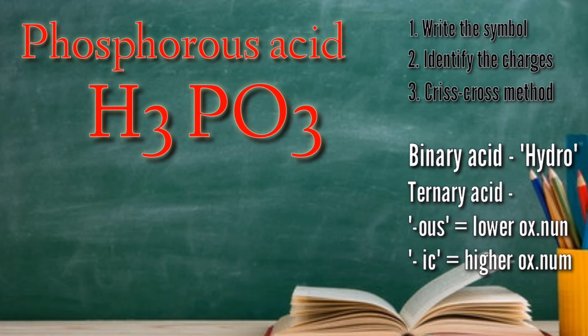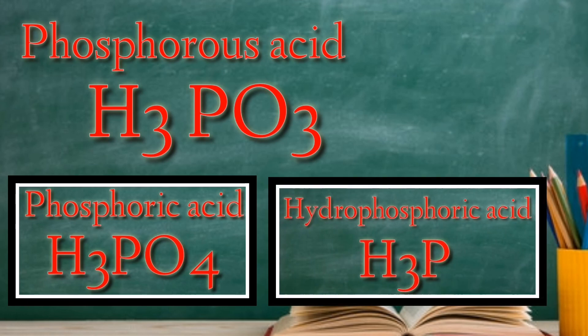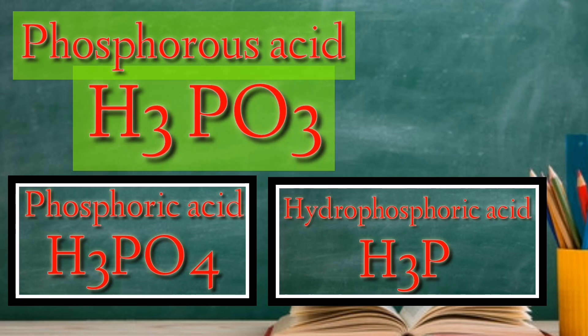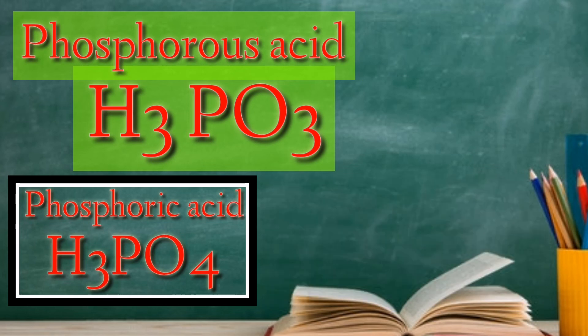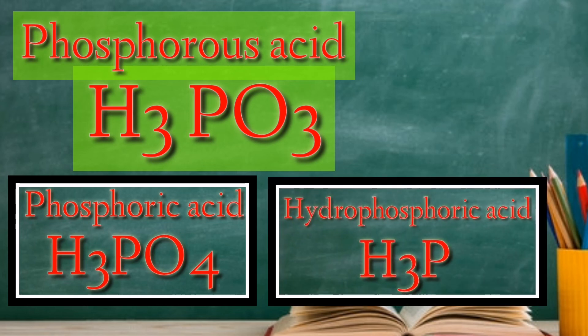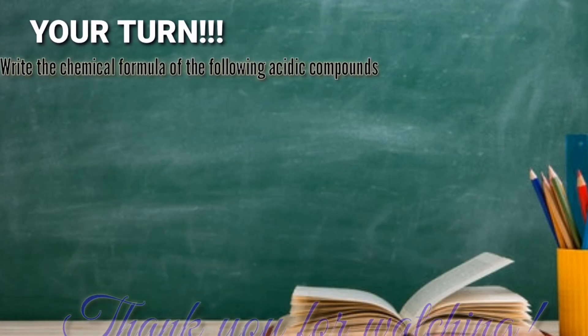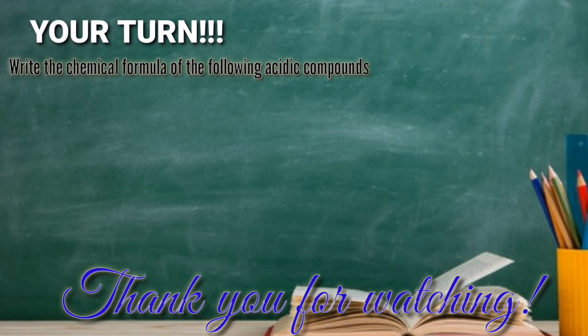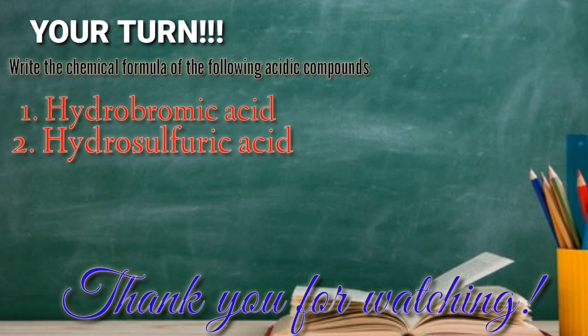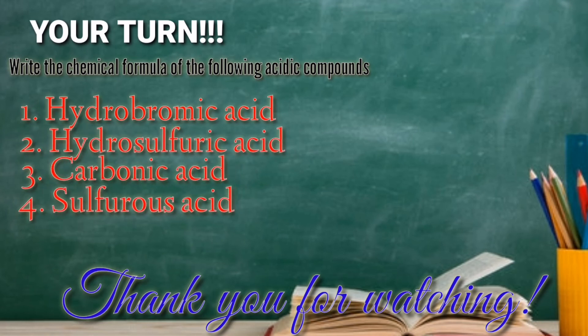Let's compare all three: phosphorous acid is H3PO3, phosphoric acid is H3PO4, and hydrophosphoric acid is H3P. Now it is your turn. Find the chemical formula of the following acidic compounds: hydrobromic acid, hydrosulfuric acid, carbonic acid, sulfurous acid, and sulfuric acid.